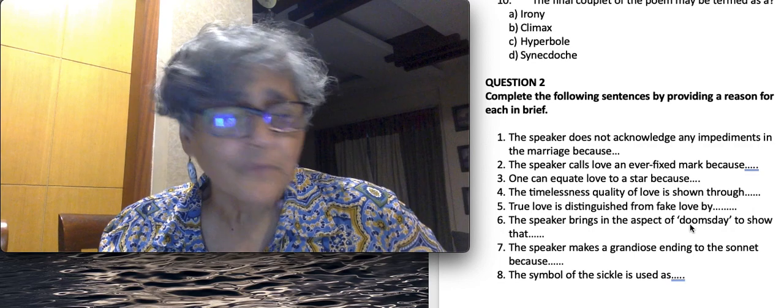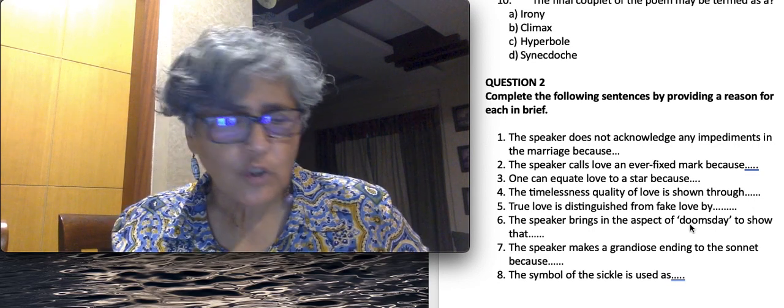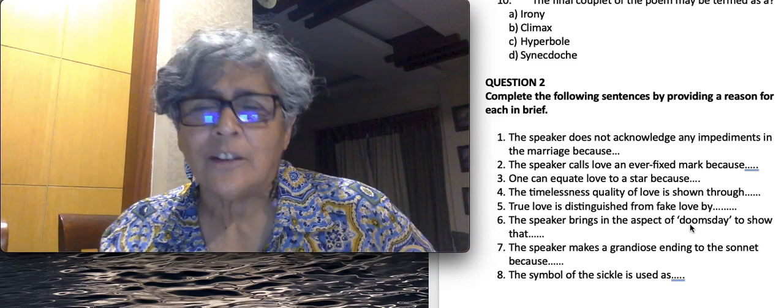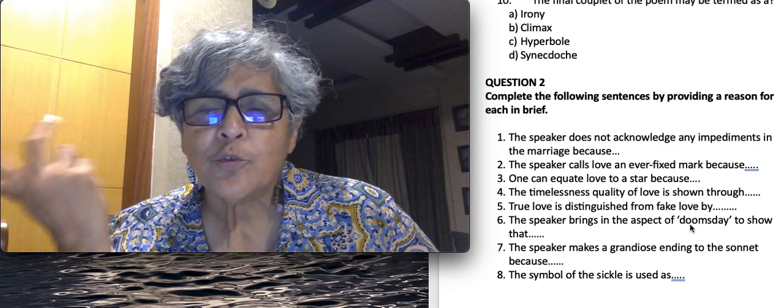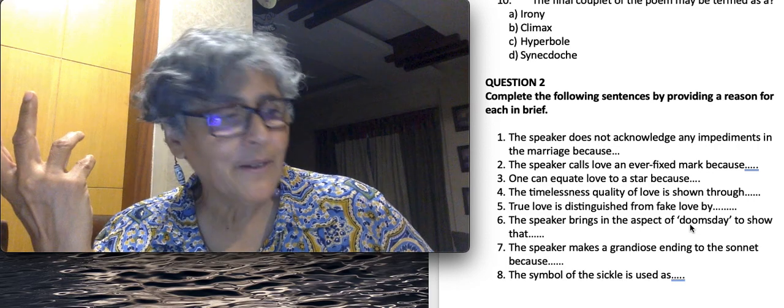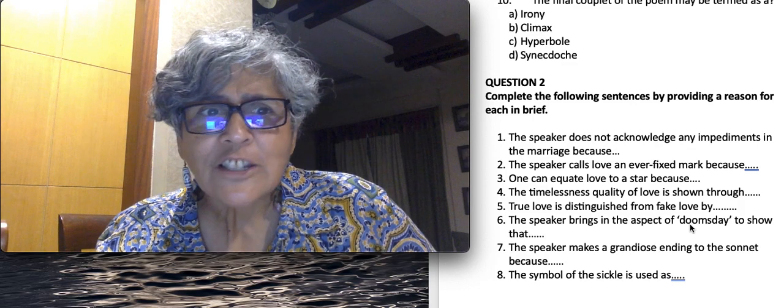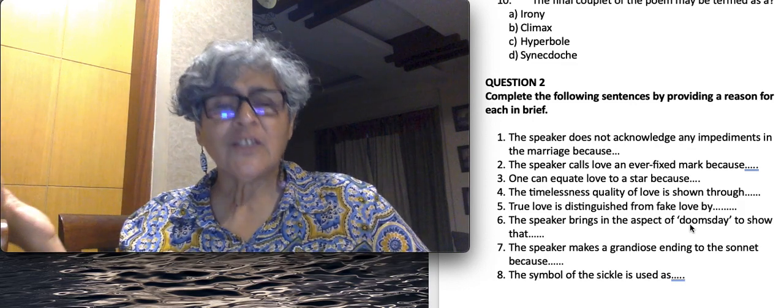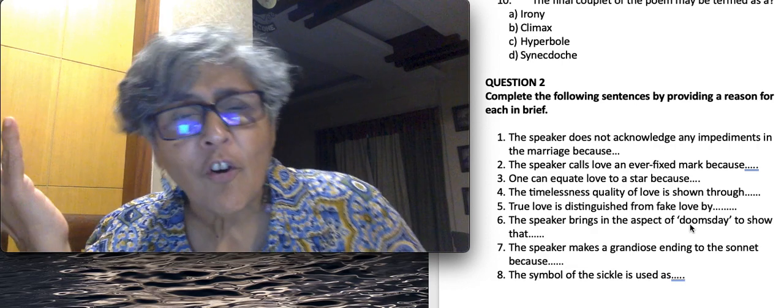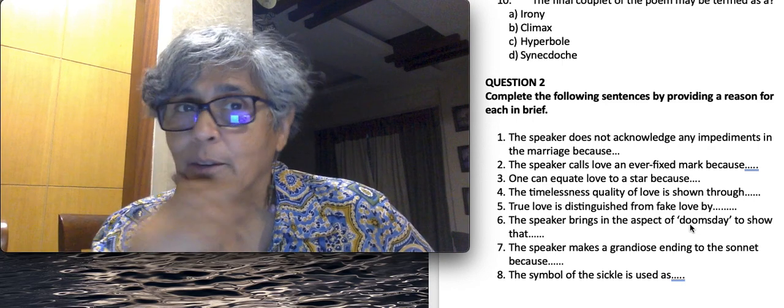If you look at question two, that is based on the reasoning question. I have put one or two of them that will help you think. If you look at the fifth one, true love is distinguished from fake love. Now you might immediately think, how do we talk about it? It's very simple. It is distinguished by resistance to change and the capacity to be timeless, the capacity to endure. That is the quality of love that Shakespeare has spoken about.